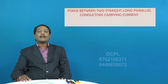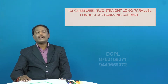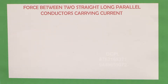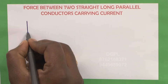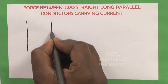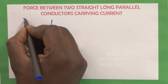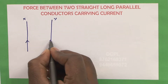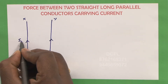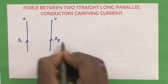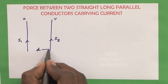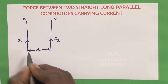Force between the two straight parallel conductors carrying current I1 and I2 in the same direction. Let us consider two straight conductors which are infinitely long, X and Y. These two conductors are carrying the current I1 and I2 in the same direction. The separation between these two conductors is D.